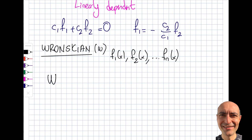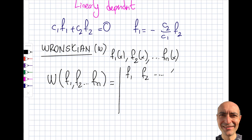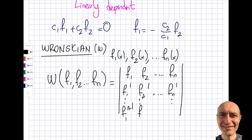We simply call it W of f1, f2, all the way to fn. It's a matrix whose rows are the functions and their successive derivatives: f1, f2, ..., fn in the first row; f1', f2', ..., fn' in the second row; all the way down to the (n−1)th derivatives f1^(n−1), f2^(n−1), ..., fn^(n−1).